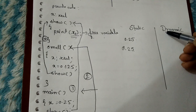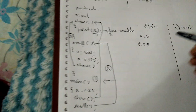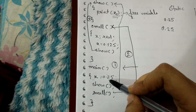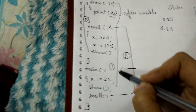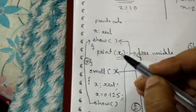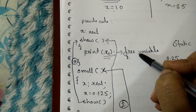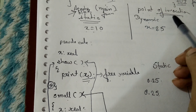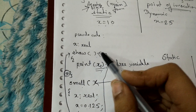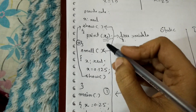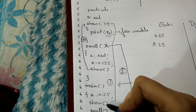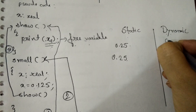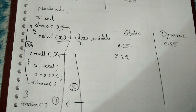Now let us see what happens in dynamic scoping. Execution starts from the main function where X is 0.25. The show function is called, and in show we have X as a free variable. This time we use dynamic scoping, which works on the principle of point of invocation. The show function is called from the main function, so for the value of X we refer to the main function. The main function's value of X is 0.25, so in dynamic scoping the first value printed is 0.25.